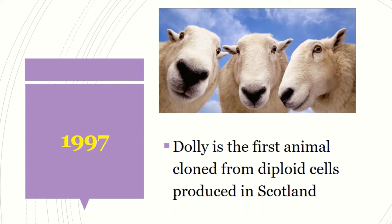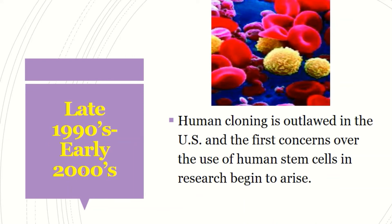Then in 1997, we had the very first animal cloned from diploid cells in Scotland. This animal was called Dolly — the very first animal to be cloned. And of course, this faced a lot of ethical issues. Now in the late 1990s and early 2000s, we had the issue of human cloning — though this was outlawed — and the use of human stem cells in research, which has faced a lot of ethical issues.